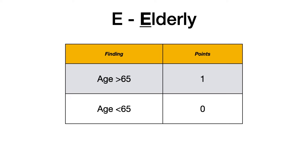The E in HAS-BLED stands for elderly, specifically age greater than 65. If they are over 65, they get one point. If they are 64 or younger, they get zero points.